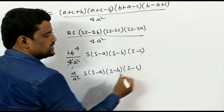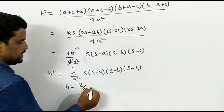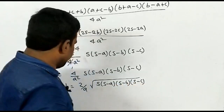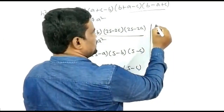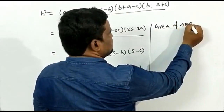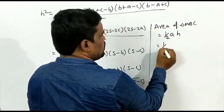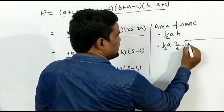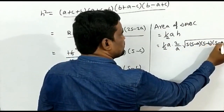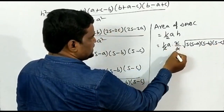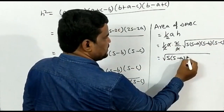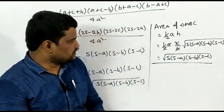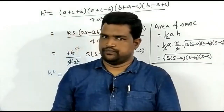Therefore H = (2/A) · √[S(S−A)(S−B)(S−C)]. Now, Area of triangle ABC = (1/2) × base × height = (1/2) × A × H = (1/2) × A × (2/A) × √[S(S−A)(S−B)(S−C)]. The A and 2 cancel, giving: Area = √[S(S−A)(S−B)(S−C)] square units. This is Heron's formula derived by the algebraic method.